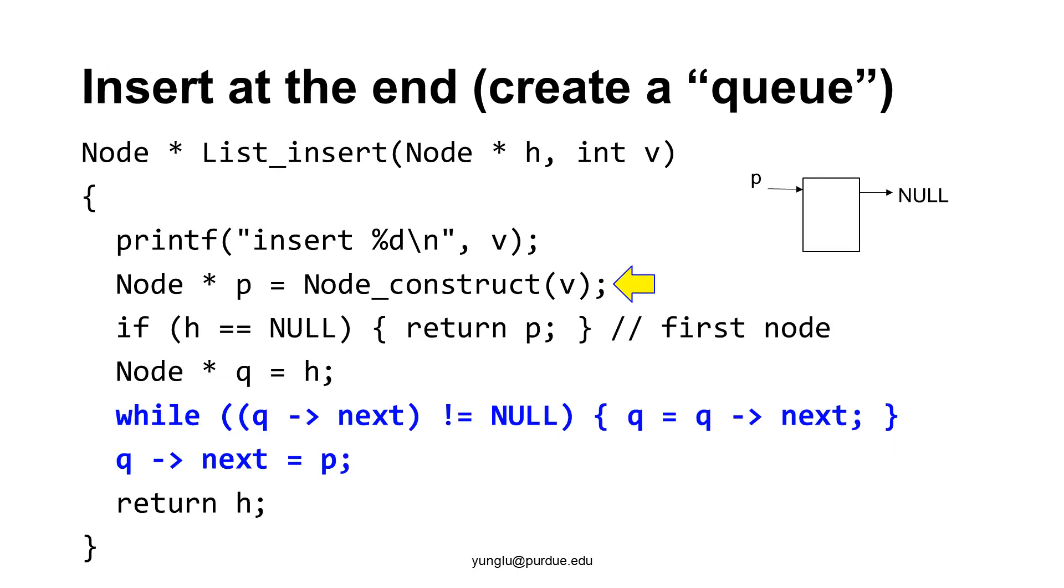What should we do if we want to insert the new node at the end of the linked list? When we do that, we are creating a queue. It is a queue because the first inserted node will be at the beginning of the linked list. The last inserted node will be at the end of the linked list.